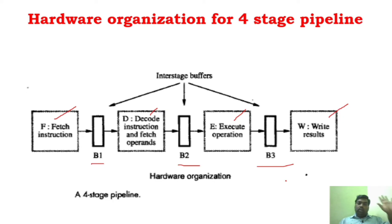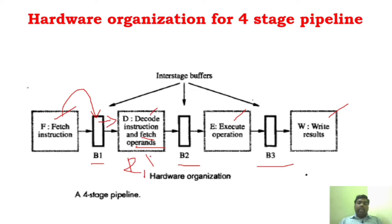You have to be very clear about what fetch will do, what decode will do, and what execute will do. Buffer 1 will always have the information from the fetch unit — it will get the information from the fetch unit. The decode unit will start decoding the instructions — the information present in buffer 1. It will fetch the operands. Decoding means, as I said, remember R1 and R2 — it will fetch the operands. What is R1, what is R2 — everything will be done in the decode phase. All this information will be stored in buffer 2: what is the operation (ADD), what is the source operand R1, what is the destination operand R2.